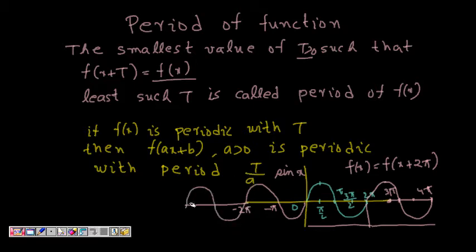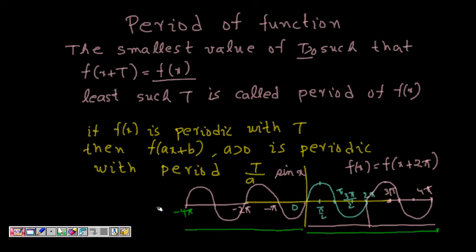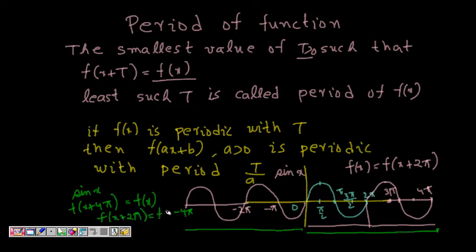Now why do we take the least value? If we extend the graph, from −4π to 0 the function is also replicating itself from 0 to 4π. So sin x is also periodic if f(x + 4π) = f(x), and also f(x + 2π) = f(x). But since T must be the least value greater than 0, it is 2π for which the function repeats itself, and that is called the period.